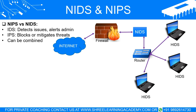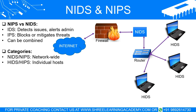Combined systems: Sometimes you can have a system that combines both IDS and IPS features, giving you the benefits of both surveillance and active protection. Categories of IDS/IPS — Network-based (NIDS/NIPS): These systems monitor the entire network for suspicious activities. They are like a CCTV system installed at all entrances and exits to a building, watching for any unauthorized entry.